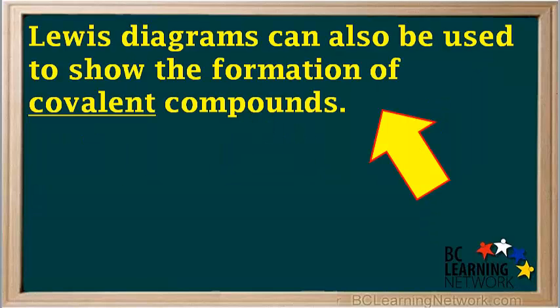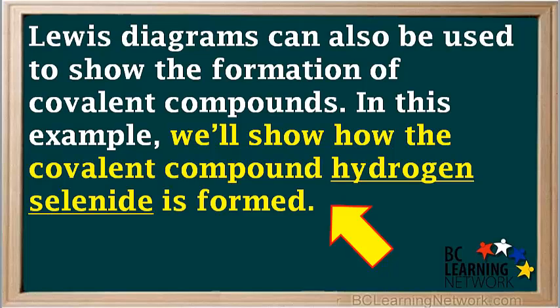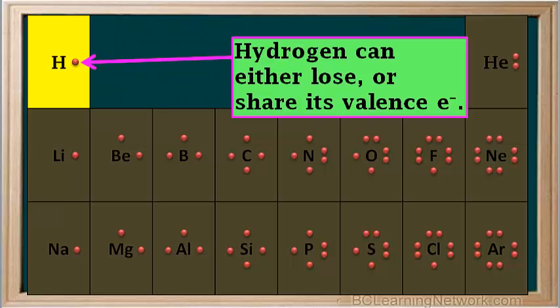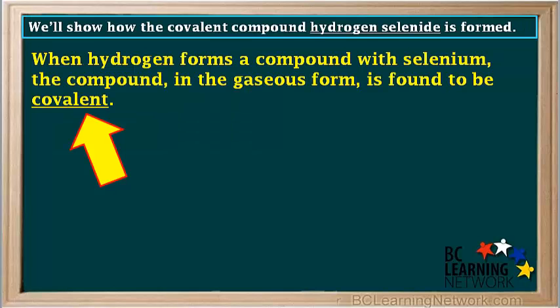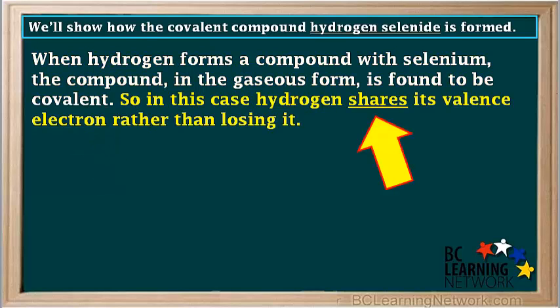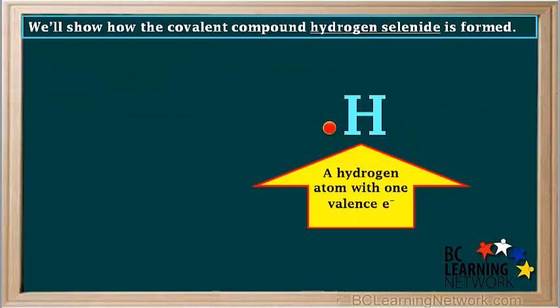So far in this video we've looked at ionic compounds. Lewis diagrams can also be used to show the formation of covalent compounds. In this example we'll show how the covalent compound hydrogen selenide is formed. Hydrogen has one valence electron. It can either lose this electron and form an H⁺ ion, or it can share this electron with another element and form a covalent bond. When hydrogen forms a compound with selenium, the compound in gaseous form is found to be covalent. So in this case hydrogen shares its valence electron rather than losing it. So we'll show a hydrogen atom with one valence electron here.